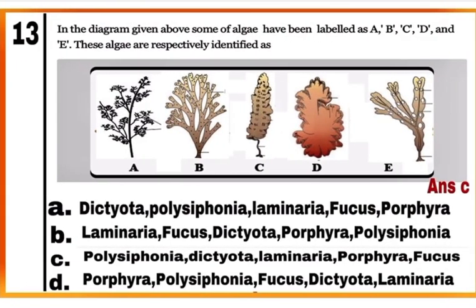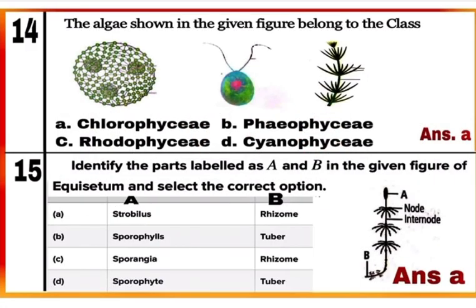Question 13: Five figures A, B, C, D, and E are given — they are all algae. Identify them. Option C is correct: figure A is Polysiphonia, B is Dictyota, C is Laminaria, D is Porphyra, and E is Fucus. Porphyra and Polysiphonia (A and D) are red algae belonging to class Rhodophyceae, while Dictyota, Laminaria, and Fucus (B, C, and E) are brown algae belonging to class Phaeophyceae. Mark C.